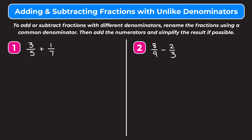Over here I'm going to write down some multiples of 5. Remember, multiples of a number are just numbers that that number goes into evenly. I'm going to write down the first maybe 10 multiples of 5: 5, 10, 15, 20, 25, 30, 35, 40, 45, 50.